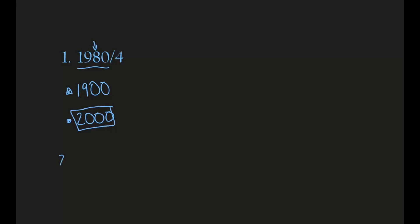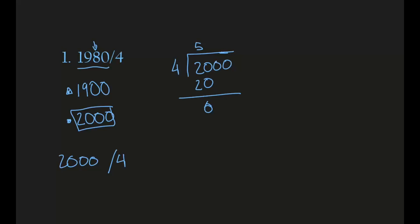Now we're going to divide 2,000 by 4. Let's set it up: 2,000 divided by 4. We know that 4 times 5 equals 20, so we subtract and get zero. These two remaining zeros we just add to the answer — one zero there and one zero there. So after we divide, we get an answer of 500.